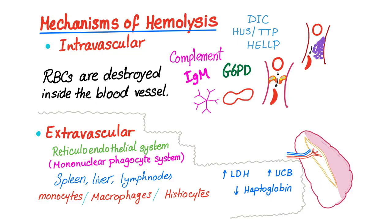In brief: extravascular means the spleen or any reticuloendothelial organ is destroying your red blood cells. In intravascular hemolysis, the hemolysis occurs inside the blood vessel — due to maybe complement or enzyme deficiency, macroangiopathic hemolytic anemia, or microangiopathic hemolytic anemia. Sing with me: DIC, TTP, HUS — microangiopathic hemolytic anemia.